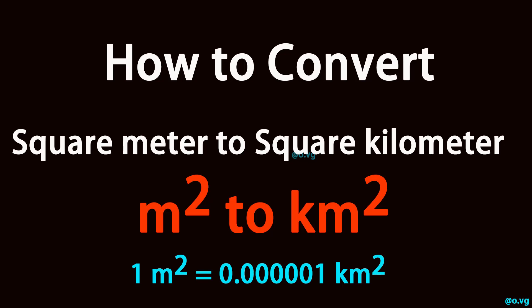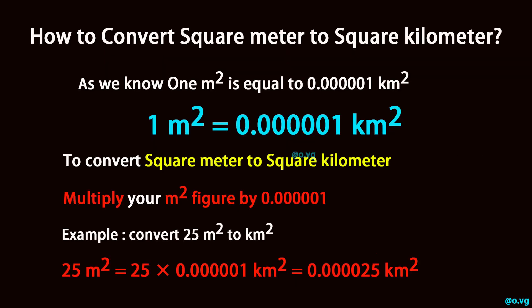How to convert square meter to square kilometer. One square meter is equal to 0.0000001 square kilometer. To convert square meter to square kilometer, multiply your square meter figure by 0.0000001.